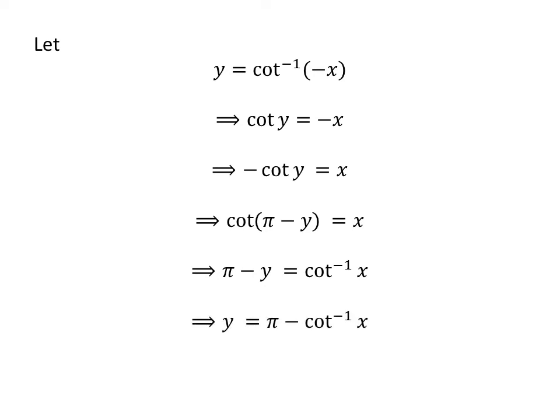Taking pi to the right side, we get minus y is equal to arccotangent of x minus pi. Then, multiplying the whole expression by minus gives us y is equal to pi minus arccotangent of x.